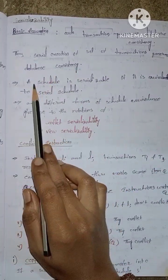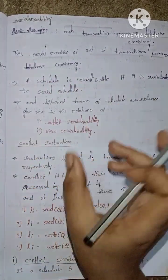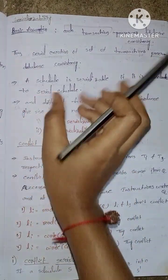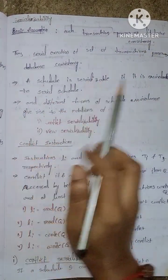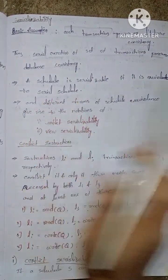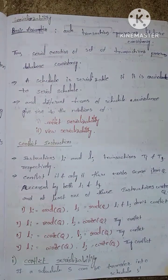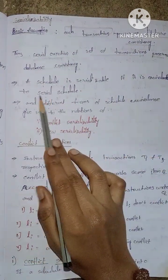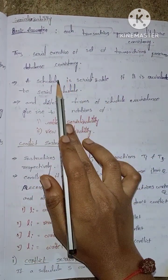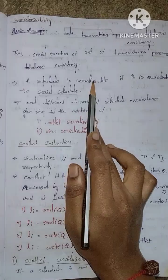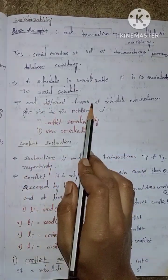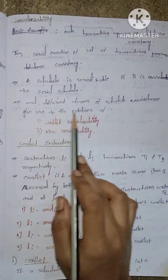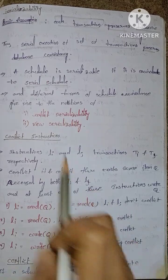The schedule is serializable if it is equivalent to a serial schedule. There are different forms of schedule equivalence, giving rise to two types.